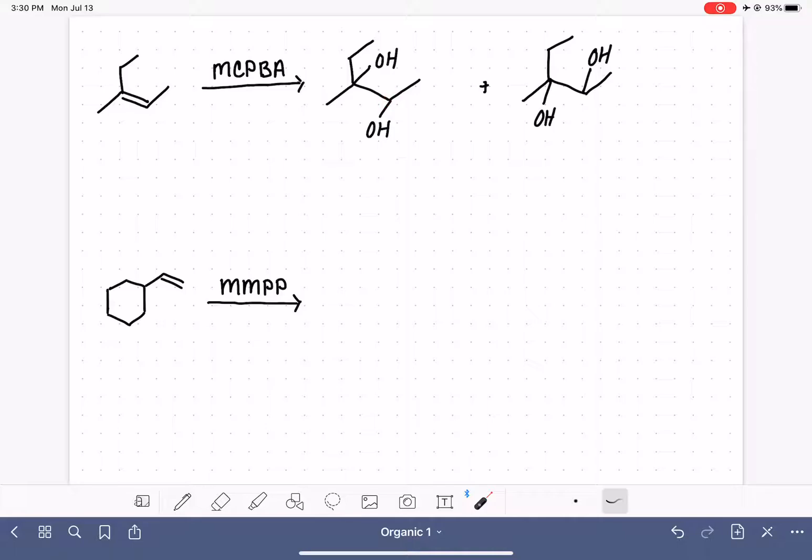And when both carbons are chiral, we've got to be careful about representing the stereochemistry accurately. So the easiest way to do that is to go back to the original alkene, pick two groups that are cis to each other.